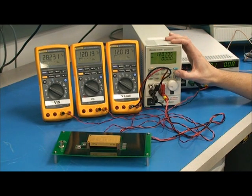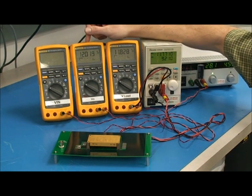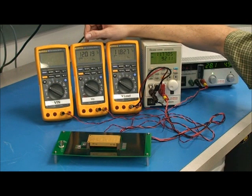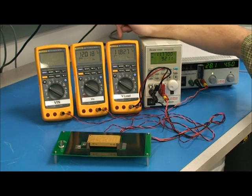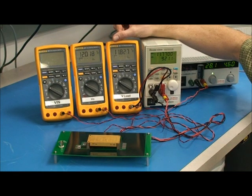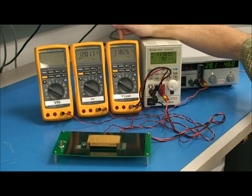Next, if I switch to full load, which in this case is 9.2 amps, the output at the pins is still 12.019, which is zero volts of load regulation. However, the voltage at the load is 11.826, which is a result of the resistance in the load connection.